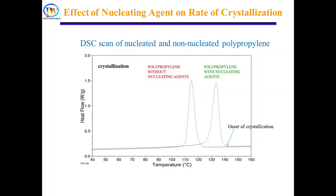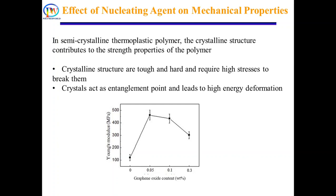Now let's try to understand the effect of rate of crystallization and size of crystallites on mechanical and optical properties of polymers. In general, crystallinity of a polymer increases its strength, because crystalline structures are tough and hard and require high energy to break. As nucleating agents lead to formation of a greater number of crystals, these crystals act as entanglement points and thus lead to polymer deformation at higher energy.